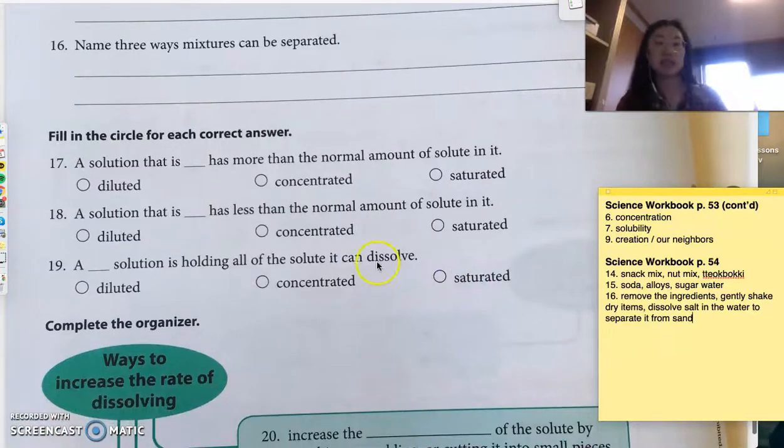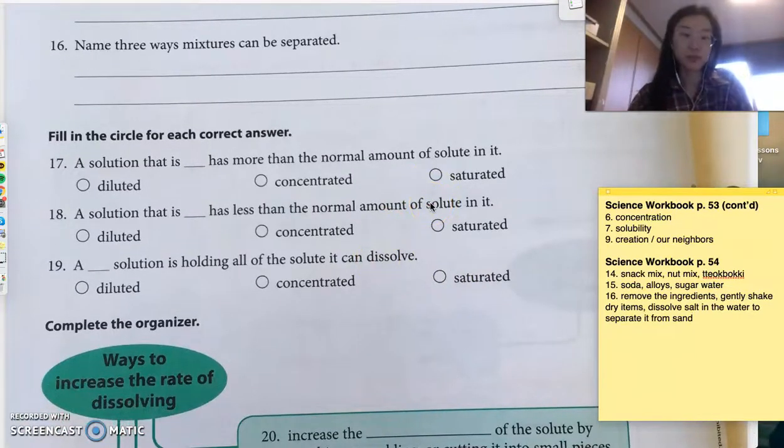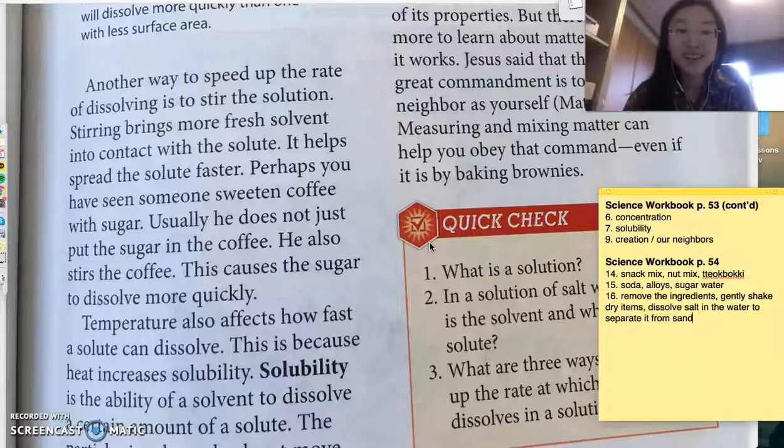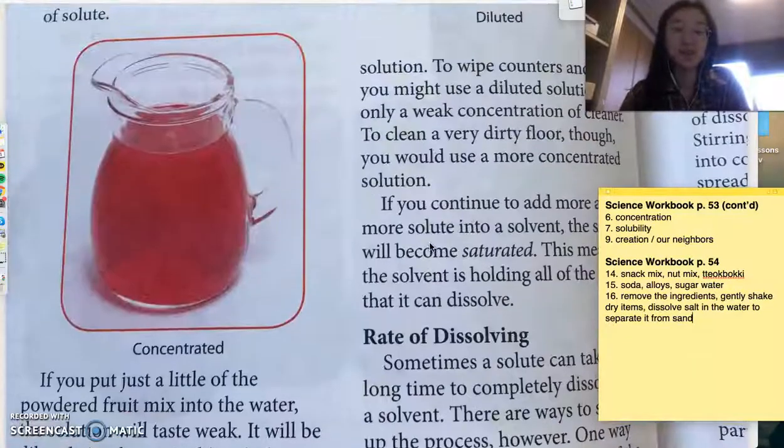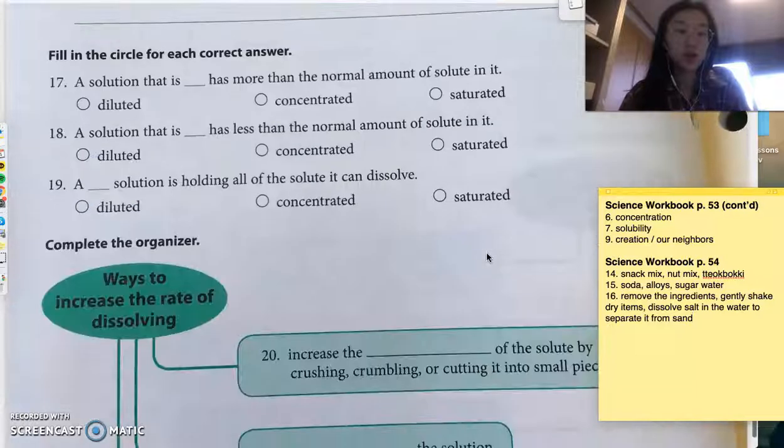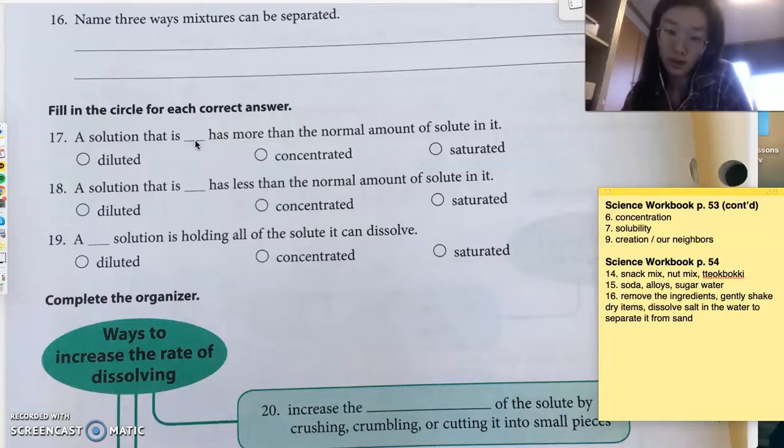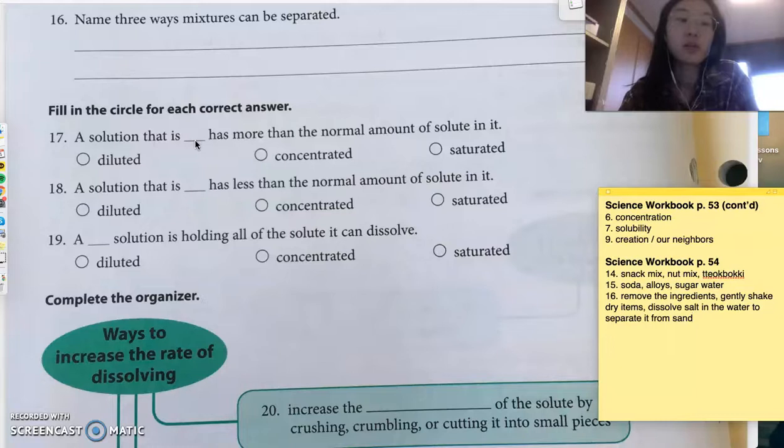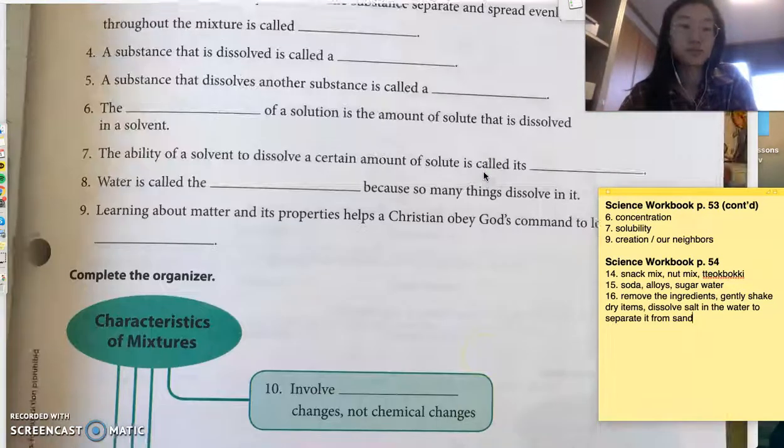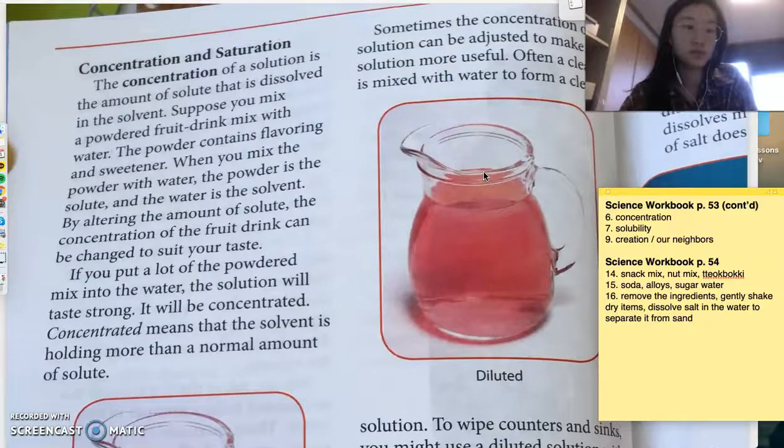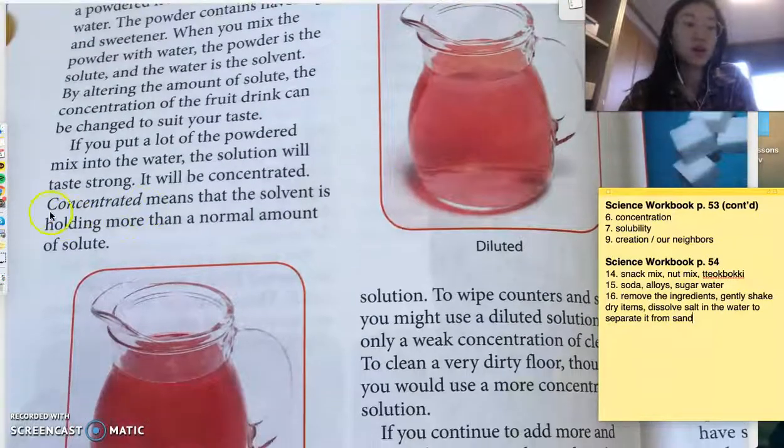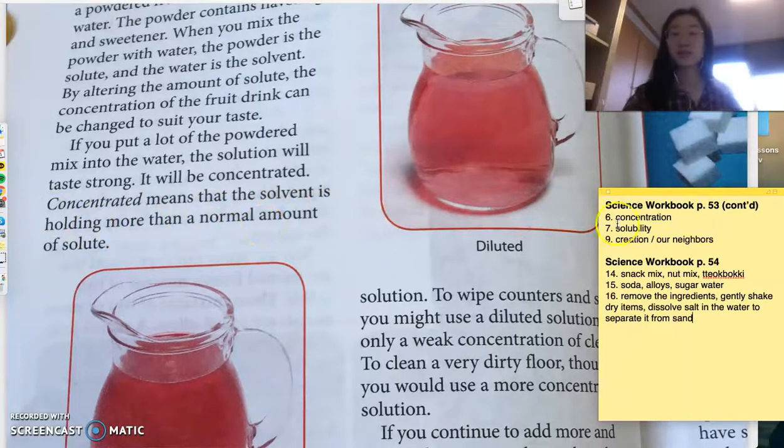All right, let's finish this. Number 17 through 19 are going to be on what we read today. Concentration, diluted substances, solubility, saturation, all that good stuff. So, number 17. A solution that is blank has more than the normal amount of solute in it. So, in other words, what do you call something when you put, not like little bit of sugar, but more than normal amount of sugar, when it's a little sweeter than normal? Is it diluted, concentrated, or saturated? Well, it says here. Concentrated means that the solvent is holding more than the normal amount. So, we got that already.